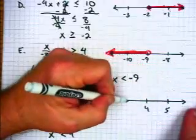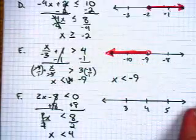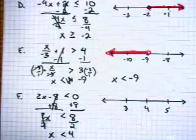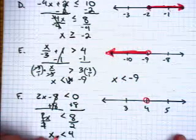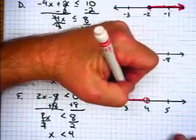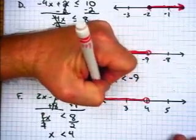x is less than 4. 4, 5, 3. Open circle at 4. x is smaller. The numbers that are smaller than 4 are this way.